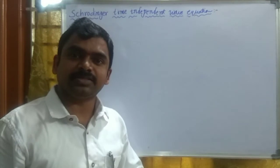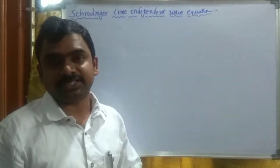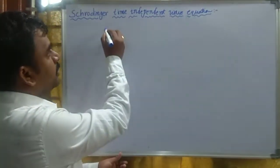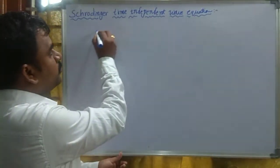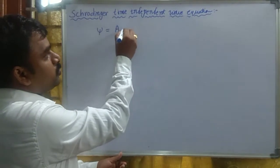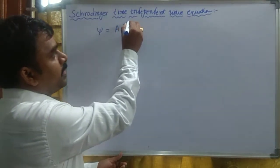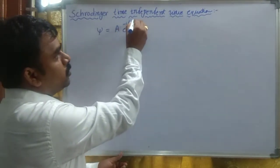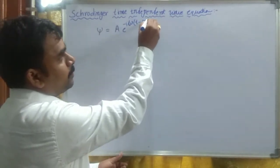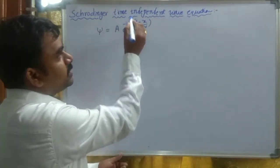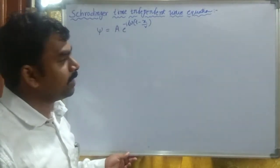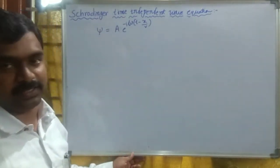We have to introduce a mathematical expression for a particle that is moving associated with a wave. That is: ψ equals A·e^(−iω(t − x/v)). Here, ω is the angular frequency, v is the velocity, t is the time, and x is the position of the particle.